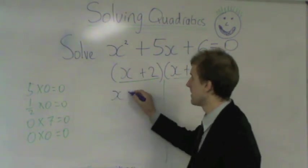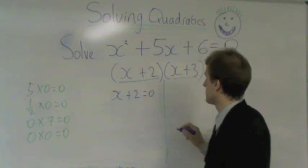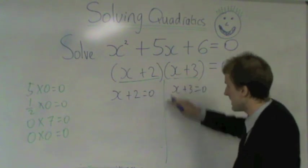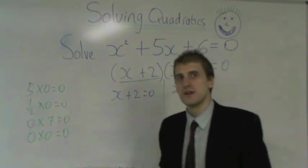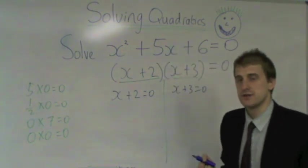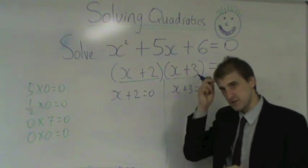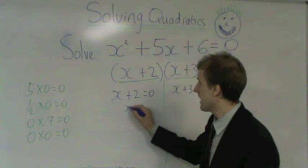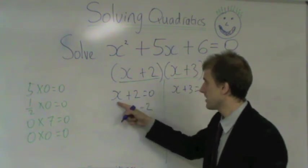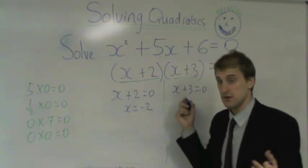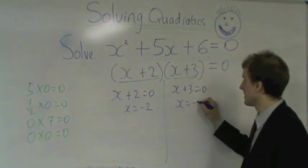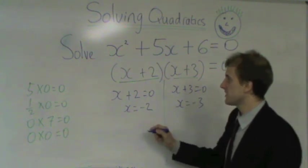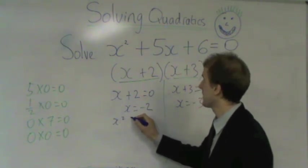So my options are x plus 2 is zero, or x plus 3 is zero. So I've split in two here. With a quadratic, we get up to two solutions. You can't have more than two solutions for a quadratic. So when x plus 2 is zero, x has got to be minus 2, because minus 2 add on 2 makes zero. When x plus 3 is zero, x has got to be minus 3, because minus 3 plus 3 makes zero.